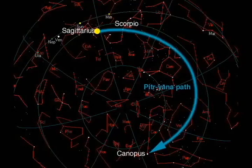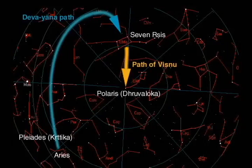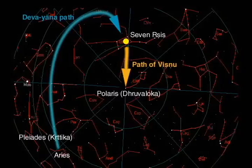There is likewise a path of the gods, which extends north of the ecliptic to the constellation of the Seven Sages, which we know as the Big Dipper. From there, liberated souls reach the abode of Vishnu in Dhruvaloka, the pole star.